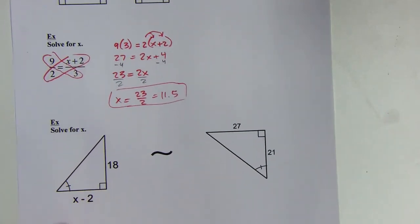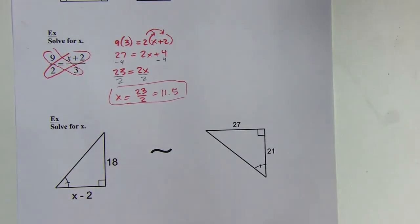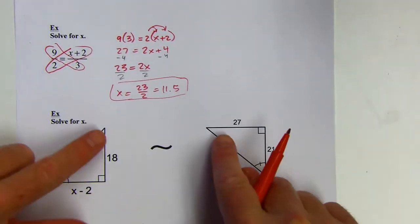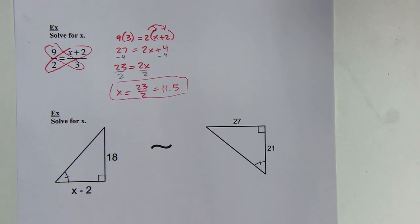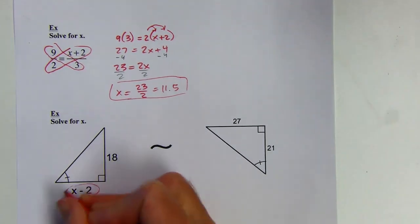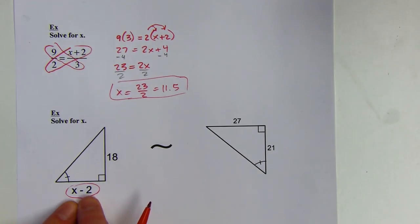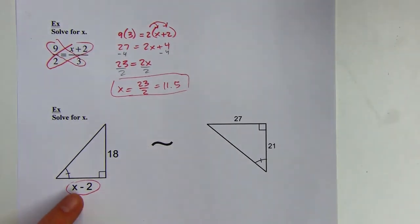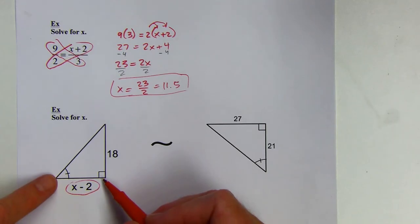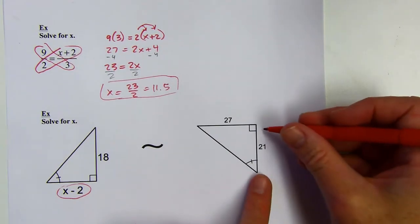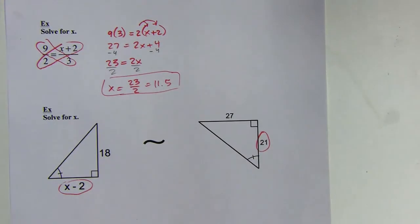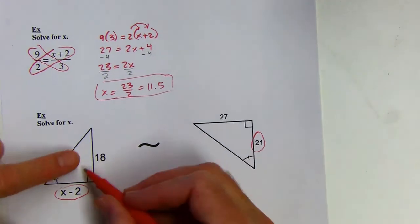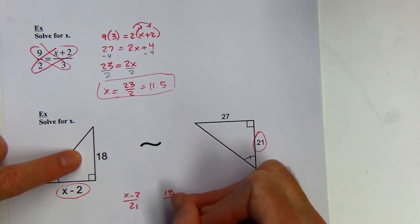For the last problem, we solve for x in two similar triangles — that's given right there. I know all the angles are congruent, but what's more useful is that all the sides are in proportion. I need to identify corresponding sides. Looking at the placement: the unknown side x − 2 is between the one-dash angle and the right angle, and the same is true for the corresponding side on the other triangle.